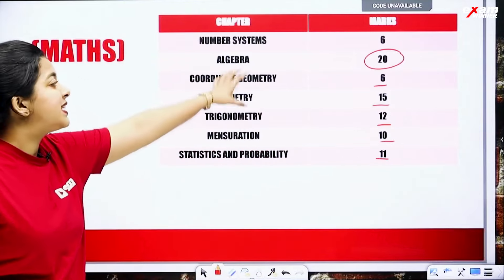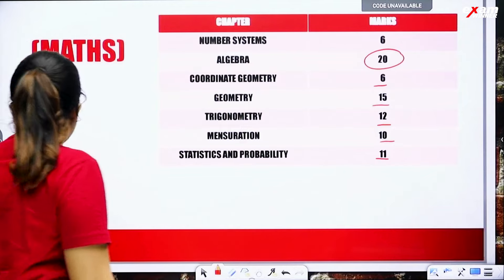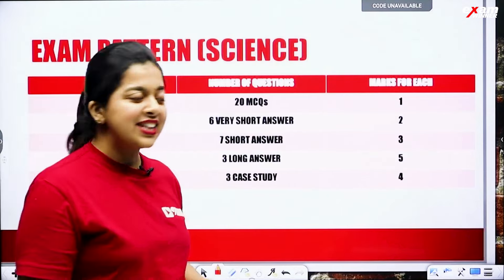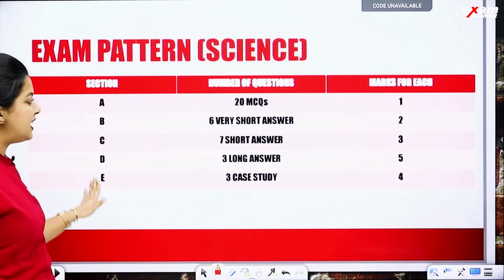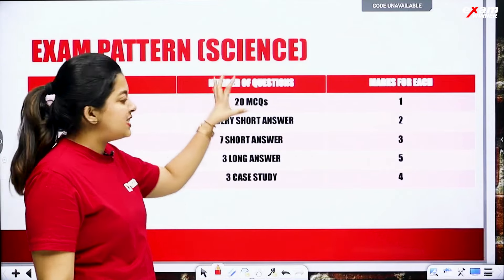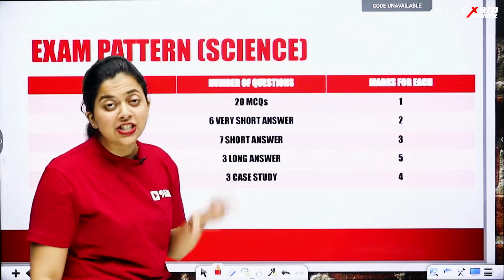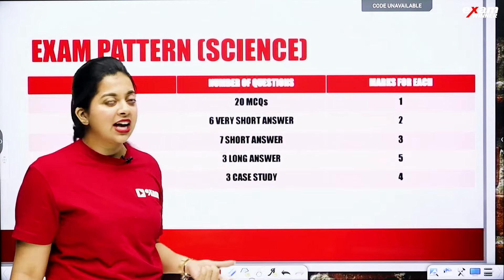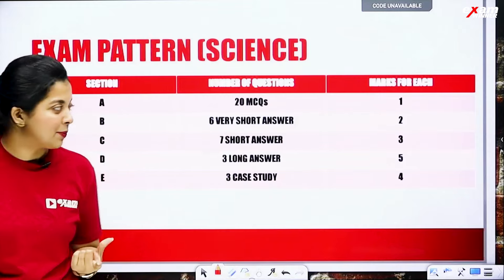So we have algebra. For the science pattern, sections A, B, C, D, E: we have 20 MCQs, then 6 very short answers, 7 short answers, then 3 long answers, and 3 case studies.